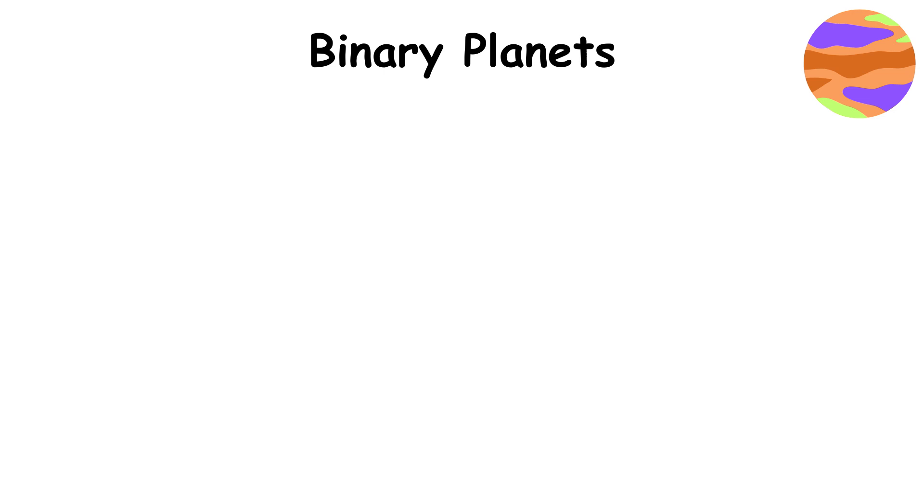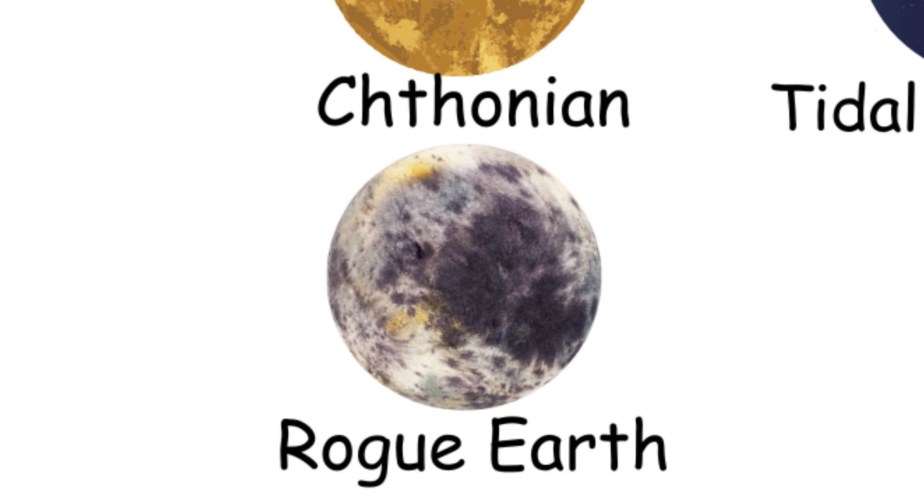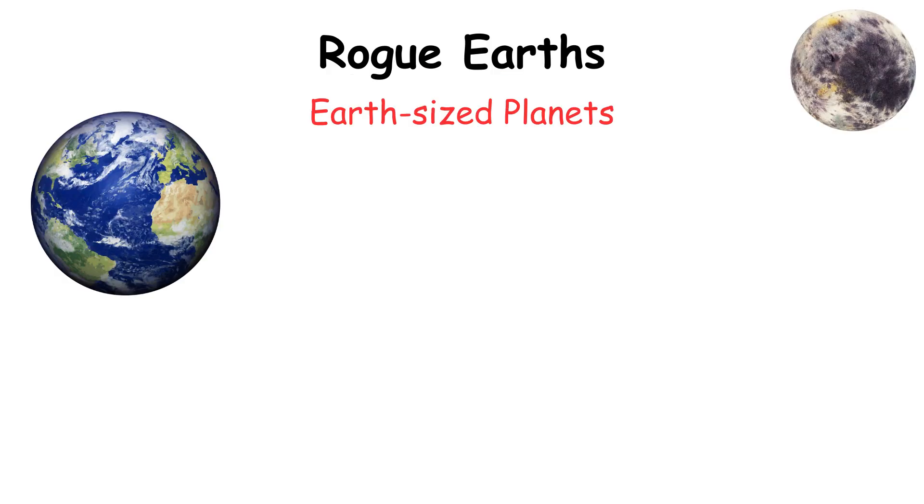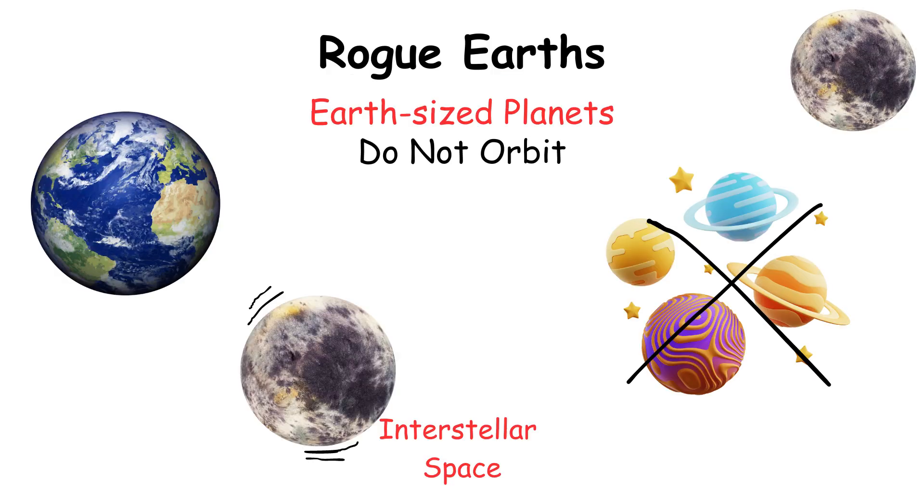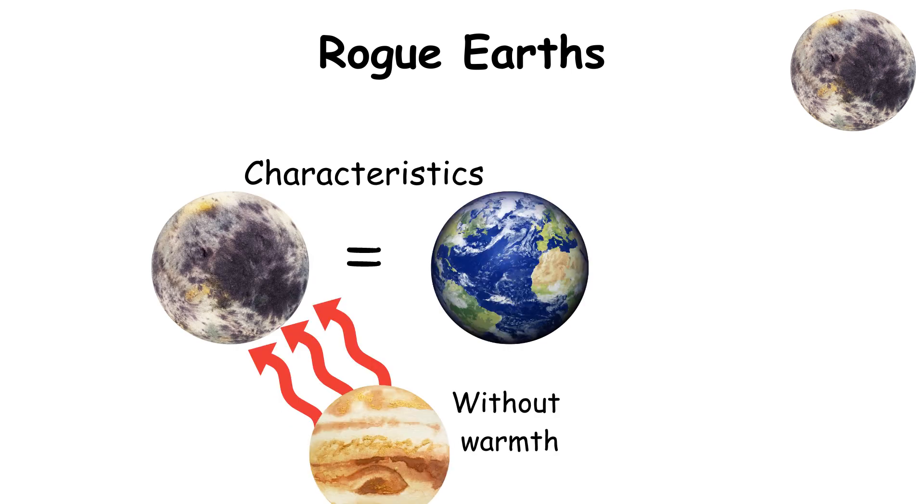Binary planets are pairs of planets that orbit each other rather than a single star. Rogue Earths are Earth-sized planets that do not orbit any star and drift through interstellar space. They would have similar characteristics to terrestrial planets but without the warmth provided by a nearby star.